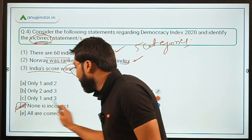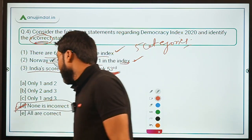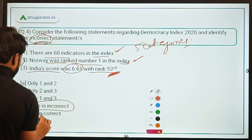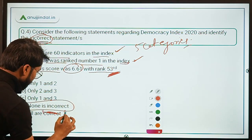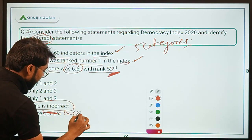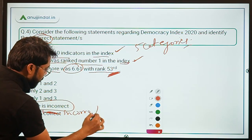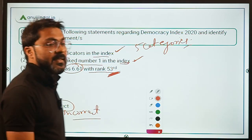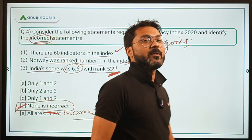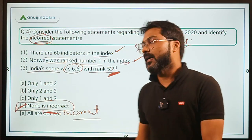Since all statements are correct and we need to identify the incorrect statement, option D — 'none is incorrect' — should be the correct answer. The option wording should read 'none is incorrect'.